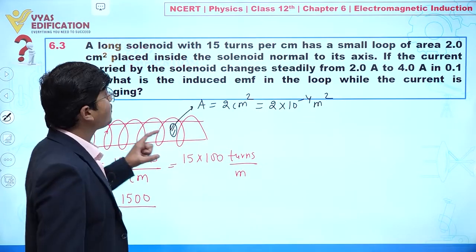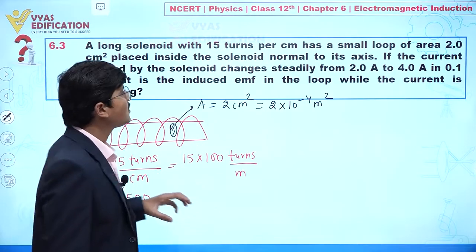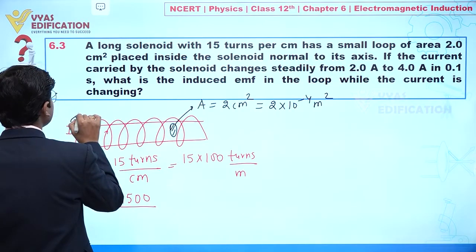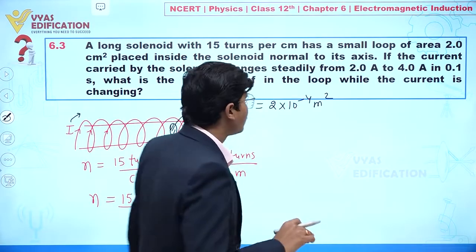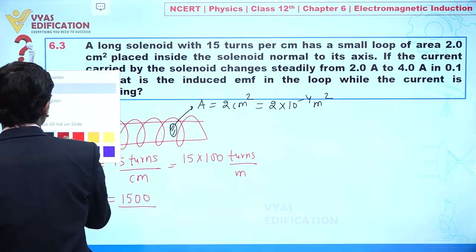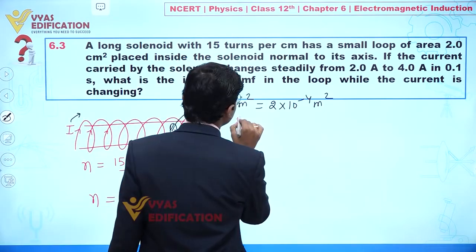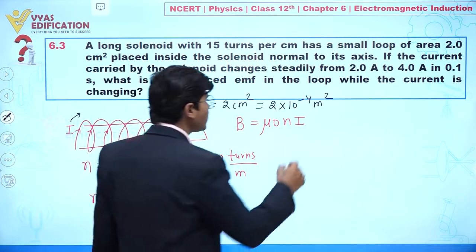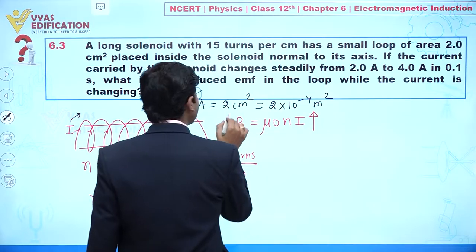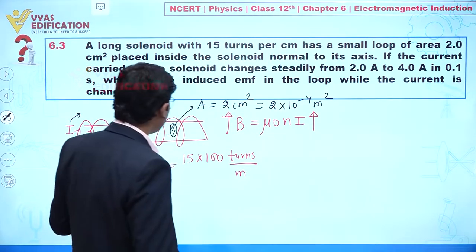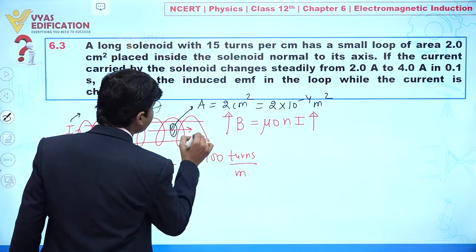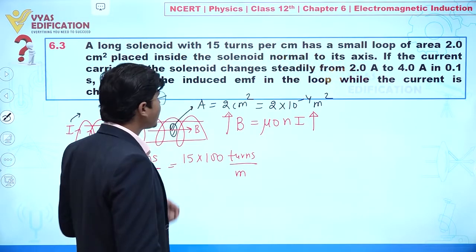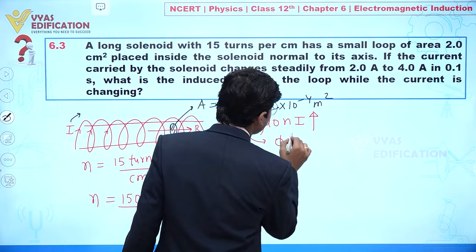The current carried by the solenoid changes from 2 ampere to 4 ampere in 0.1 second. We know the magnetic field due to the solenoid at its axis is given by B = μ₀nI. When the value of I changes, the value of B changes, and when B changes, the magnetic flux associated with the loop also changes.